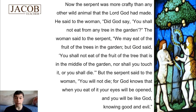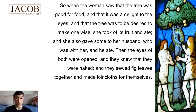Now the serpent was more crafty than any other wild animal that the Lord God had made. He said to the woman, 'Did God say you shall not eat from any tree in the garden?' The woman said to the serpent, 'We may eat of the fruit of the trees in the garden, but God said you shall not eat of the fruit of the tree that is in the middle of the garden, nor shall you touch it, or you shall die.' But the serpent said to the woman, 'You will not die, for God knows that when you eat of it, your eyes will be opened and you will be like God, knowing good and evil.' So when the woman saw that the tree was good for food, and that it was a delight to the eyes, and that the tree was to be desired to make one wise, she took of its fruit and ate. She also gave some to her husband, who was with her, and he ate. Then the eyes of both were opened, and they knew that they were naked, and they sewed fig leaves together and made loincloths for themselves.